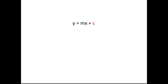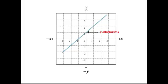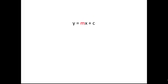The c refers to the y-intercept. This is where a line crosses the y-axis. The m refers to gradient. Gradient is the same as slope.